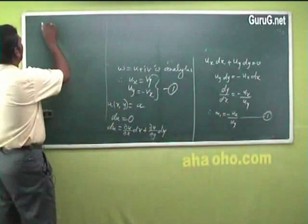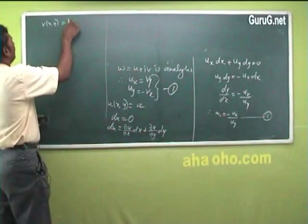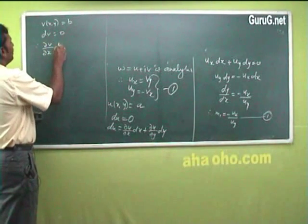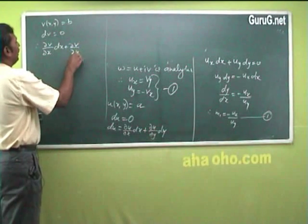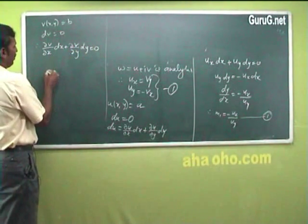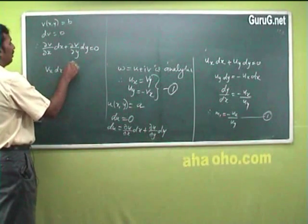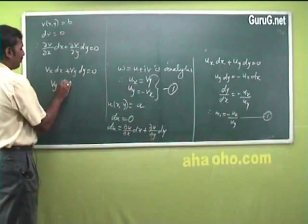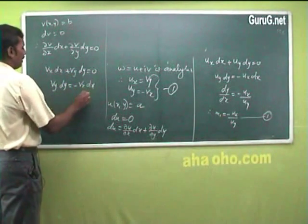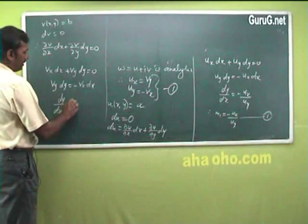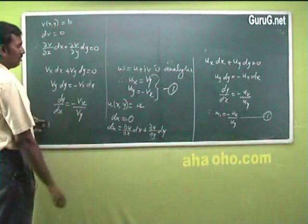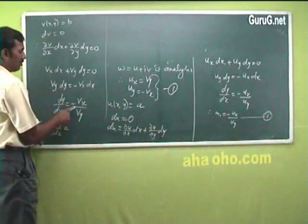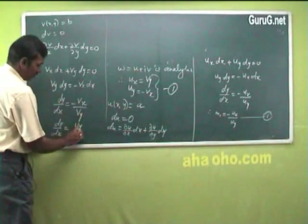Similarly, for the curve v(x,y) = b, taking dv = 0: dv = (∂v/∂x)dx + (∂v/∂y)dy = 0, so v_x dx + v_y dy = 0, giving dy/dx = −v_x/v_y. Using the Cauchy-Riemann equations, −v_x = u_y and v_y = u_x. Therefore m₂ = u_y/u_x.